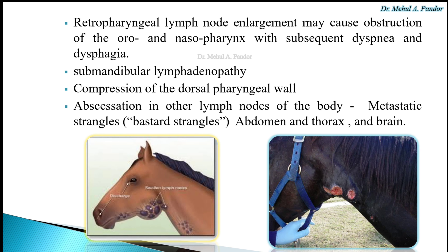Retropharyngeal lymph node enlargement may cause obstruction of the oro- and nasopharynx with subsequent dyspnea and dysphagia. Submandibular lymphadenopathy can be visible, along with compression of the dorsal pharyngeal wall. Abscessation in other lymph nodes of the body — such as in the abdomen, thorax, and brain — is also seen; this is called metastatic strangles or bastard strangles.